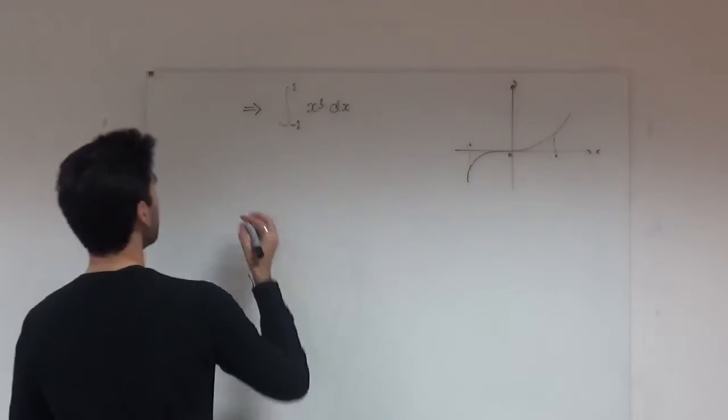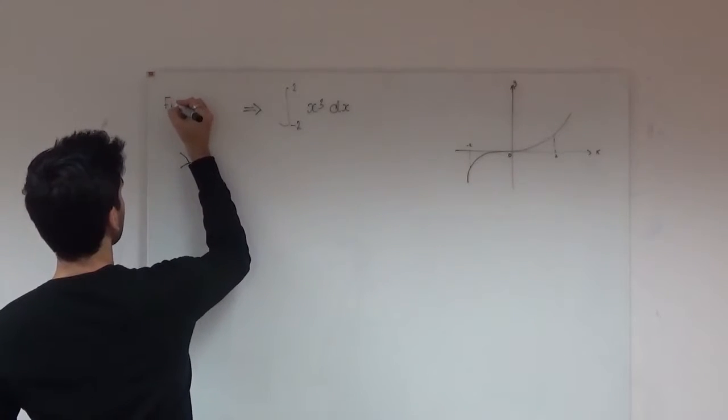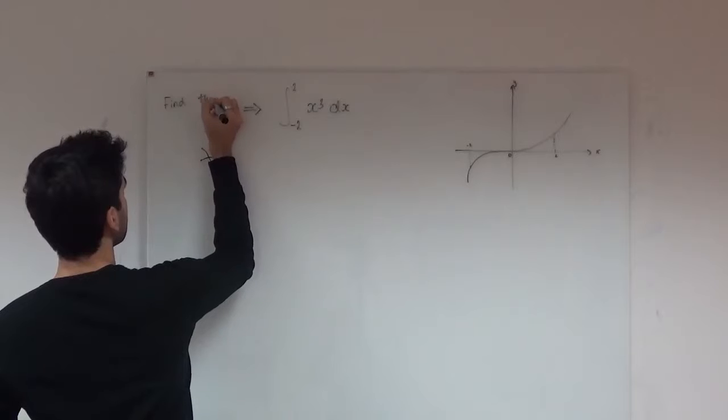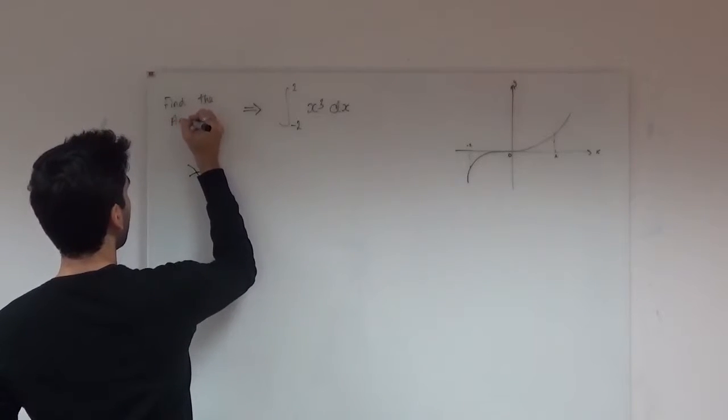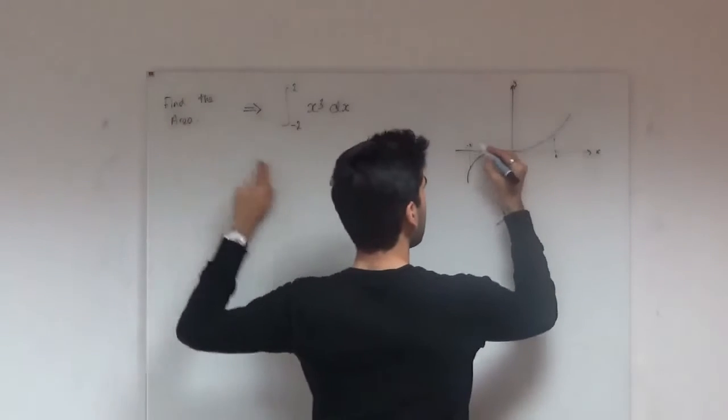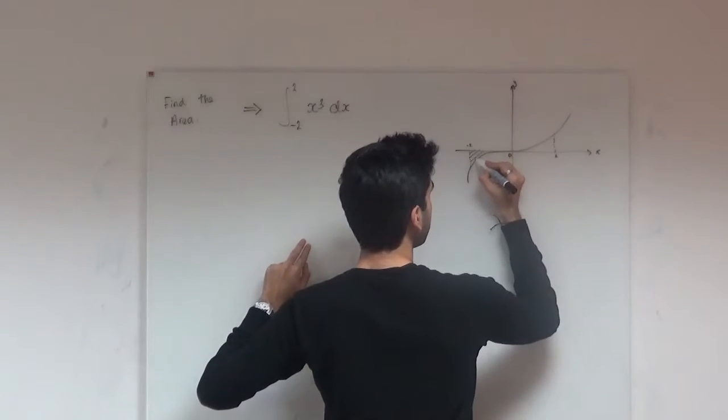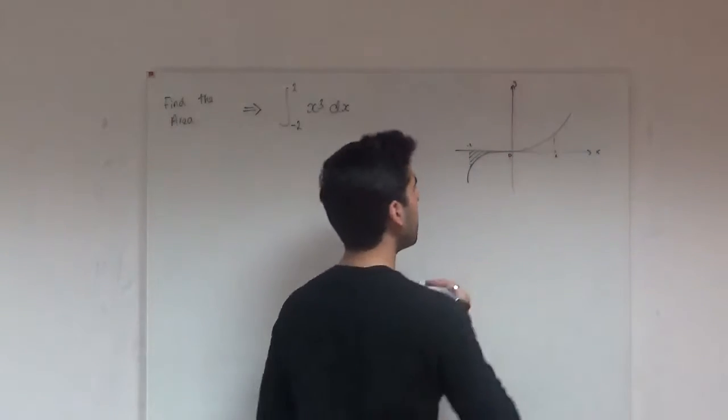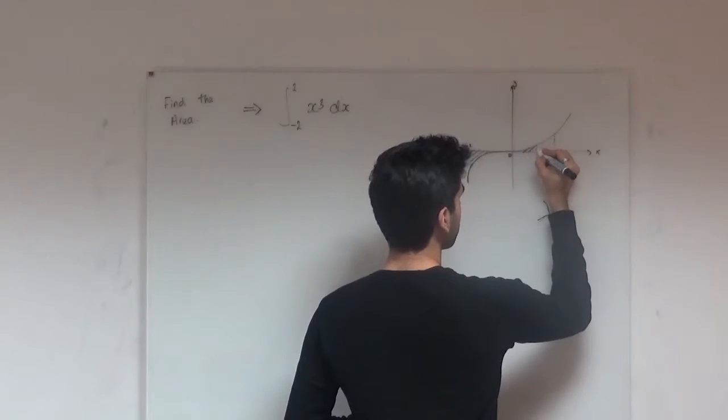Now the question would be find the area. So when we're talking about area, like I explained before, we're going to be looking at the bound between limits of where the curve is. So it will be these two sections over here.